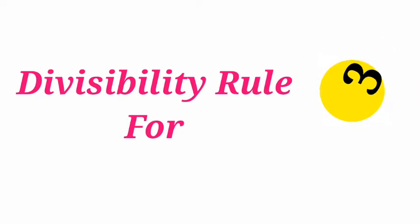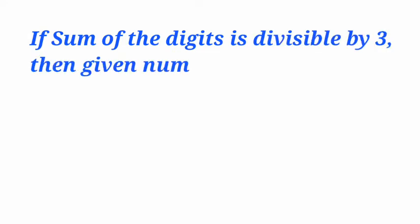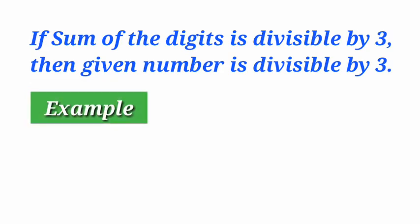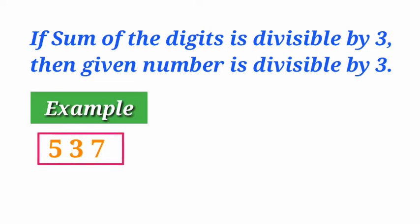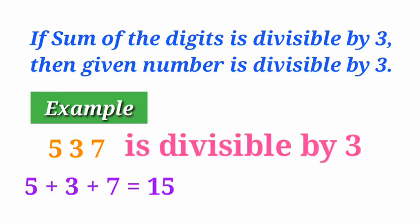Divisibility rule for 3. If the sum of the digits is divisible by 3, then the given number is divisible by 3. For example, 537. To know if this number is divisible by 3, we have to sum all the digits: 5 plus 3 plus 7 is equal to 15. Since 15 is divisible by 3, the given number 537 is divisible by 3.